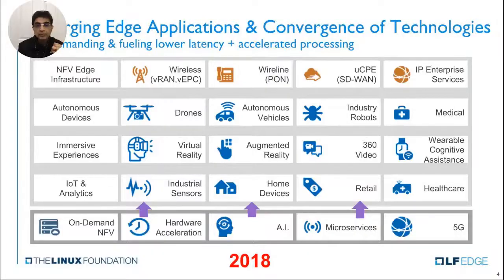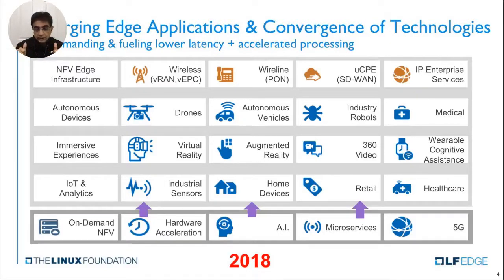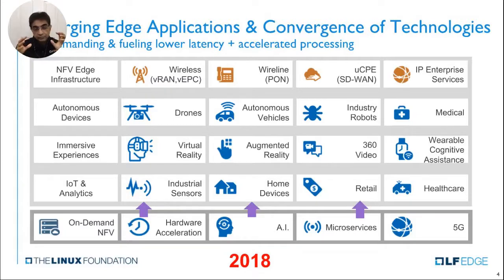The reason edge computing has become so much in demand is because five technologies converged all at the same time, starting around 2018-19: 5G, which gave you low latency; microservices, which allow applications to be written in a portable manner; AI at the edge for predictive maintenance; hardware acceleration from TPU, GPU, and NPU; and on the telecom side, network function virtualization bringing compute and storage close to the application.